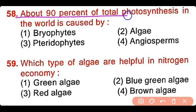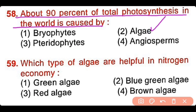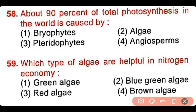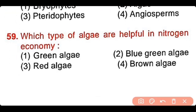Question number 58: About 90% of the total food synthesis in the world is caused by pyrrophytes, algae, pteridophytes, or angiosperms? The correct answer is option 2. About 90% of total food synthesis of the world is produced by algae.